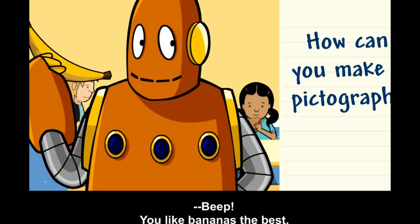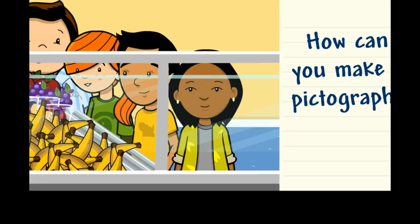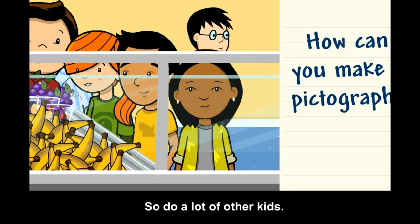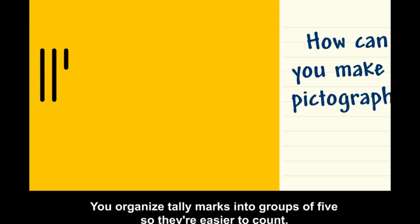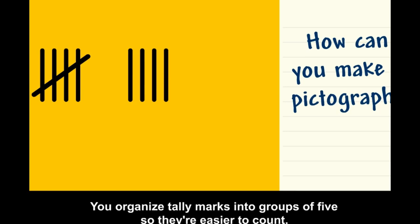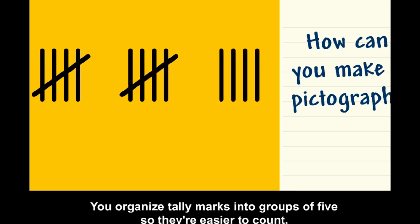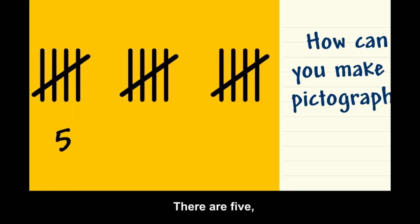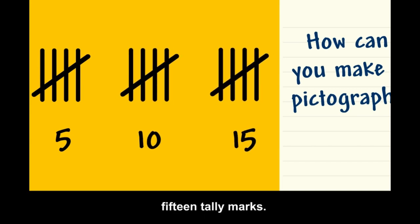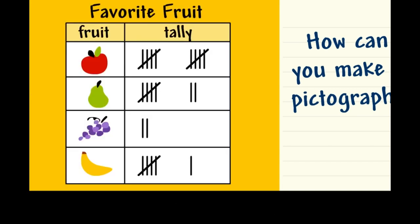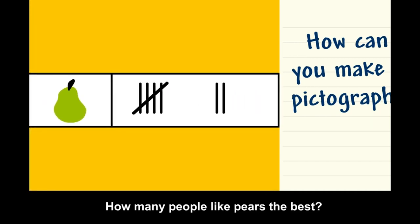You like bananas the best, and so do a lot of other kids. You can record information from your survey into a tally chart. You organize tally marks into groups of five so they're easier to count. There are five, ten, fifteen tally marks. How many people like pears the best?